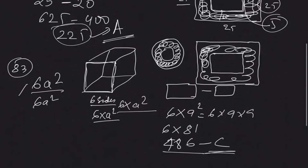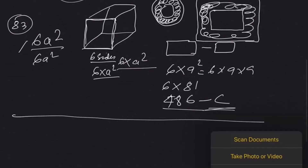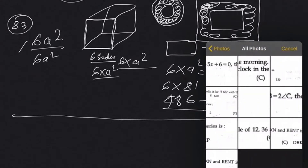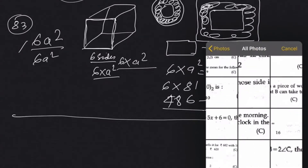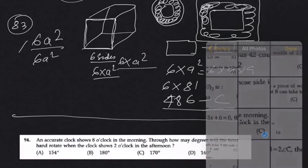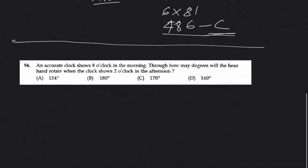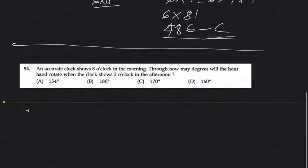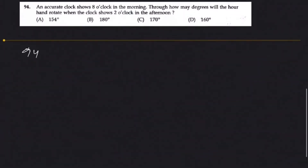Questions 66 and 83 are fairly easy. Now let's solve Question 94. An accurate clock shows 8 o'clock in the morning. Through how many degrees will the hour hand rotate when the clock shows 2 o'clock in the afternoon? This is fairly easy if we understand one concept about degrees.